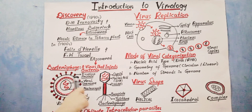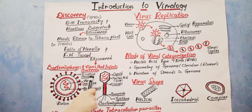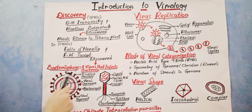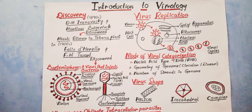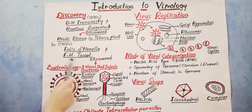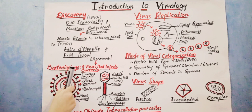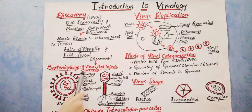Some viruses have a lipid bilayer outside the capsid, which is called an envelope. Viruses which don't contain this envelope are called naked viruses. Most phages, like bacteriophages, do not contain this envelope protein.